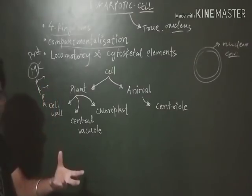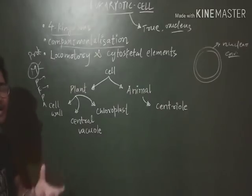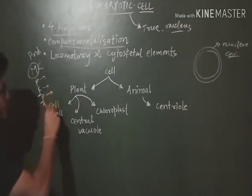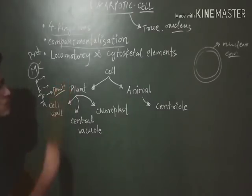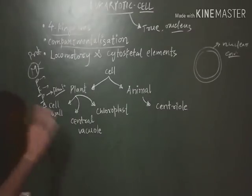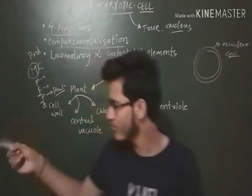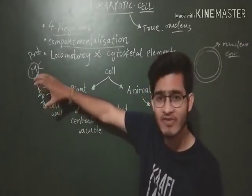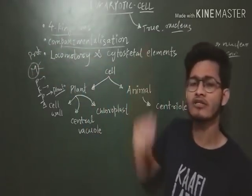Fungi are multicellular eukaryotes, though they can be unicellular as well — for example, yeast or Saccharomyces is unicellular fungi. Plants are also eukaryotic and photosynthetic; they can synthesize their own food. Animals are not photosynthetic — they are heterotrophic because they cannot synthesize their own food — but all of them are multicellular and eukaryotic organisms. So the four kingdoms are eukaryotic and the single kingdom Monera is prokaryotic.